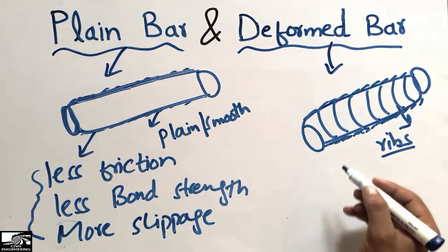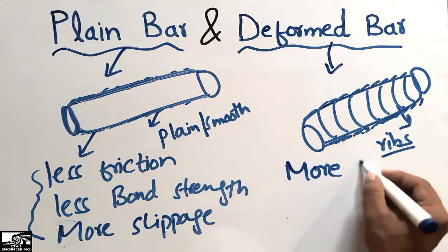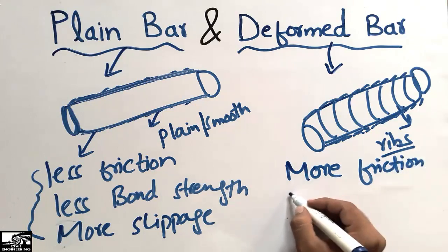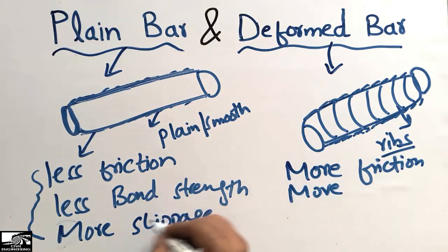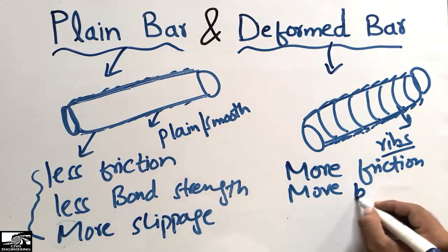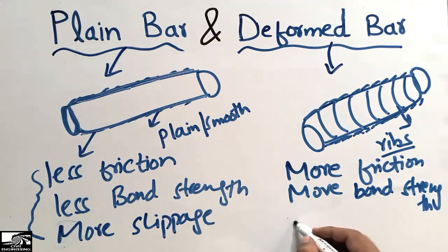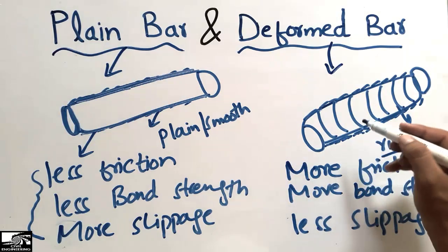Deformed bars have more friction and more bond strength between the concrete and the steel — properties that are opposite to those of the plain bar. They also have less slippage, meaning they cannot be easily pulled out of the concrete when placed in any structure.